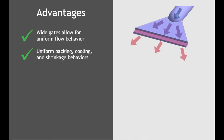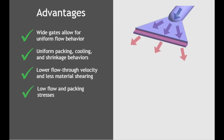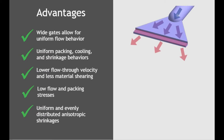Also, fan gates reduce the possibility of jetting into a mold, and they have lower flow-through velocity and so less material shearing and degradation. In addition, flow and packing stresses are generally low. Finally, when molding polymers with fibers, the fibers are more evenly aligned with fan gates, so the anisotropic shrinkages are more uniform and evenly distributed.